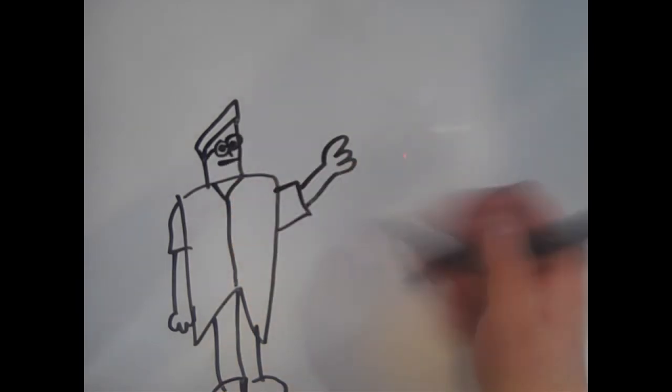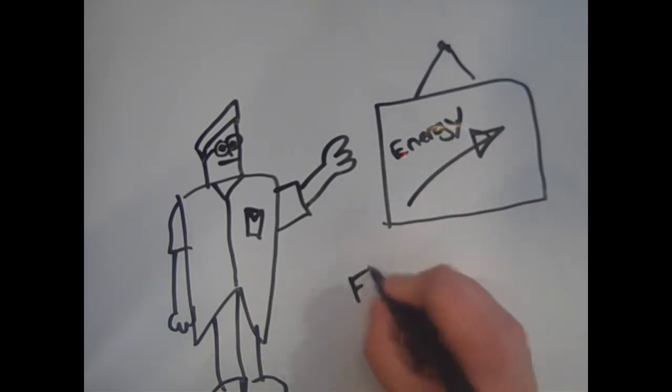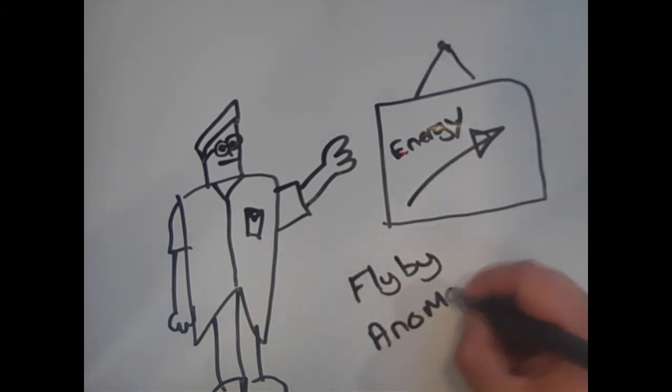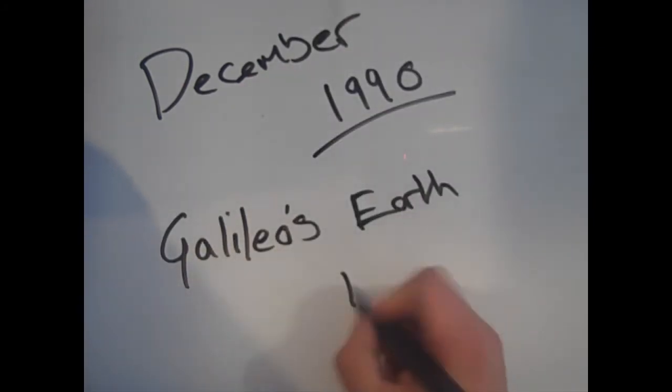Scientists have shown that it might be possible to try and detect any signs of the flyby anomaly as a result of the visit. So far, nothing seems to have been published. The flyby anomaly was first noticed in December 1990, following Galileo's Earth flyby.